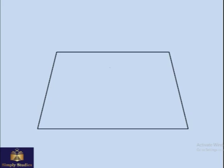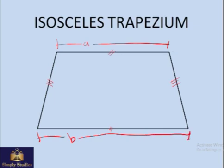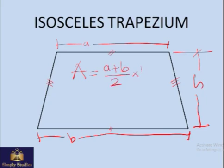The same trapezium, which had the opposite sides parallel to each other, but the other two sides are equal in length — equal in length, not parallel — is known as an isosceles trapezium. The parallel sides are still A and B units long and the height is still H, so the area is still the average of these opposite sides times height.